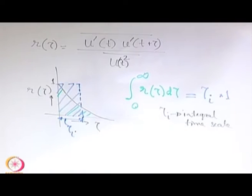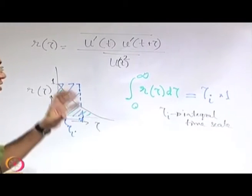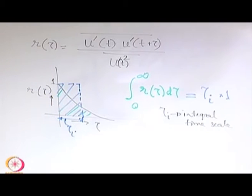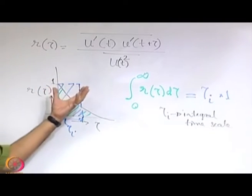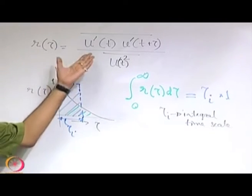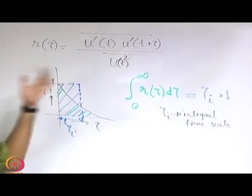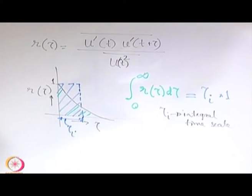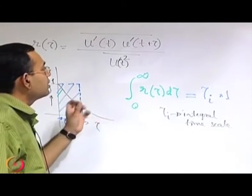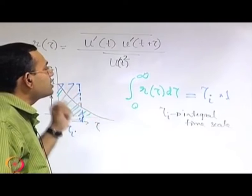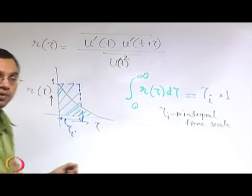The integral time scale physically is a representative time scale over which a random variable — here the random variable is the velocity fluctuation — is strongly correlated to itself as an outcome of statistical averaging over the random experiments.